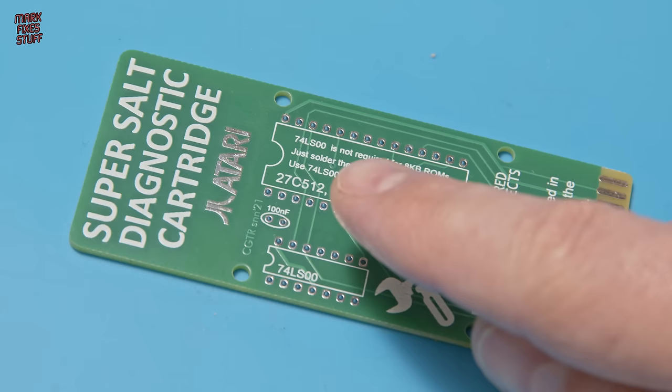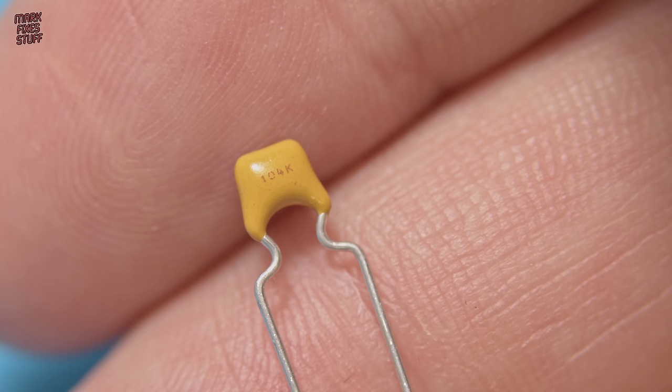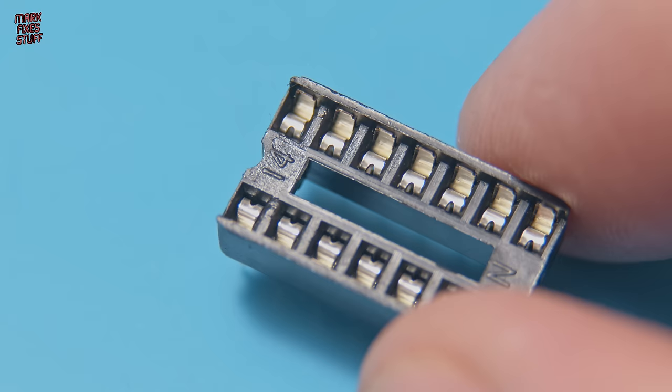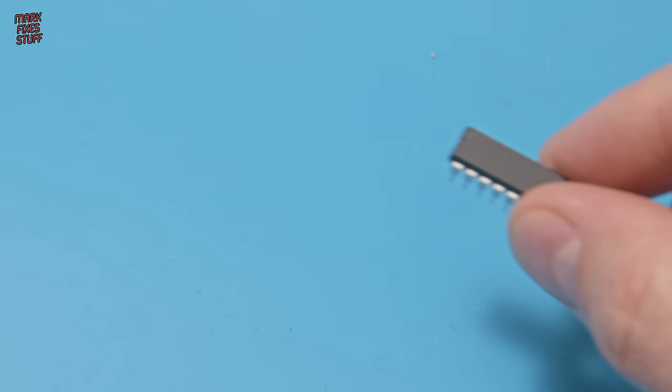The next component on the board is a 100nF capacitor. You can pick these up anywhere, they're usually marked with 104. And the last component we need is a 74LS00. I'm going to pop this into a socket as well because everybody moans at me when I don't socket them, and I can't stand the moaning.